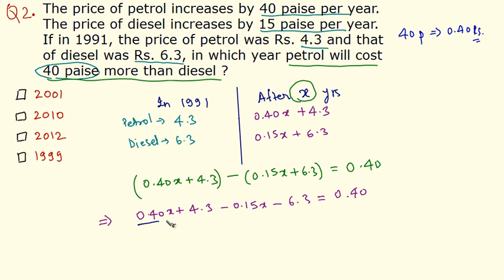Now let's solve for x. So 0.40 minus 0.15 is 0.25. So 0.40x minus 0.15x is 0.25x equals, let's move these terms to the right hand side of equals. In the right hand side we already have 0.40, so minus 6.3 becomes plus 6.3, and plus 4.3 when moved to the right hand side becomes minus 4.3.